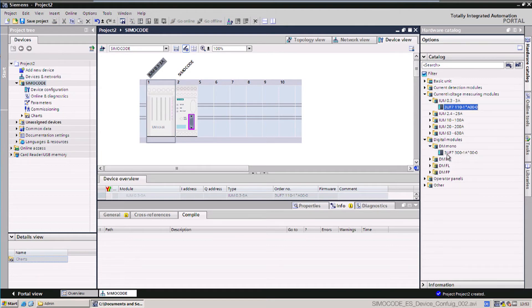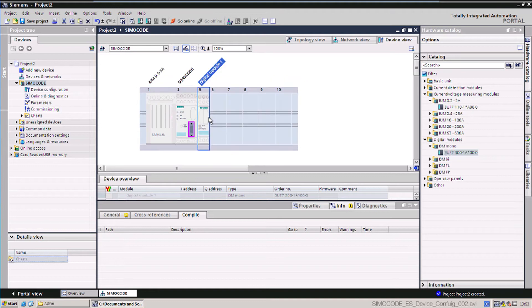Configuring the modules is carried out easily and clearly in the device view. The Simicode Pro device configurations are ready for quick use in project libraries.